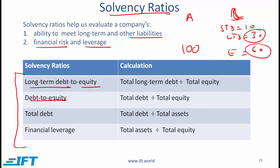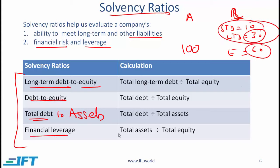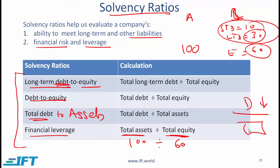The total debt to equity ratio is 40 divided by 100 — wait, that's total debt (10 + 30 = 40) divided by equity (60). The financial leverage ratio is total assets divided by total equity, so in this example it is 100 divided by 60. In general, low ratios mean the company is safer. Debt is in the numerator, so if the debt number is relatively low compared to assets or equity, the leverage is low.